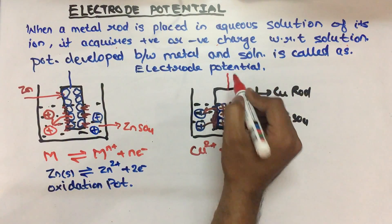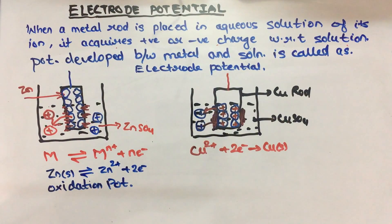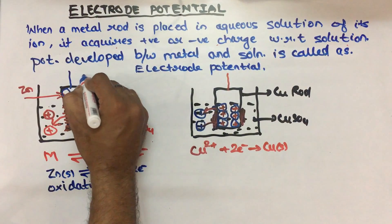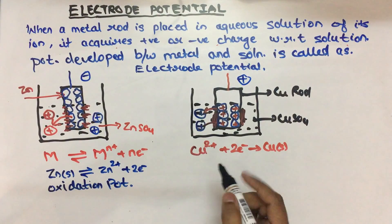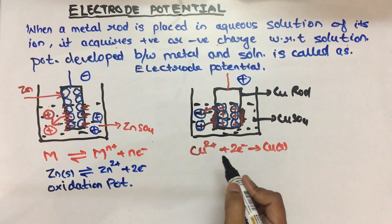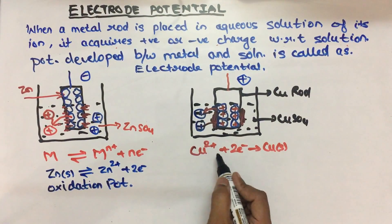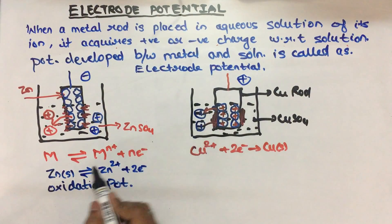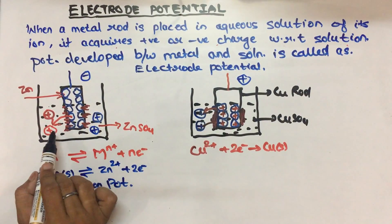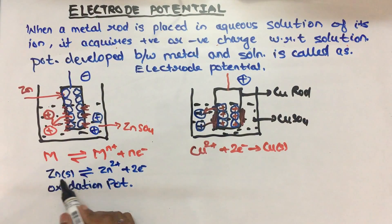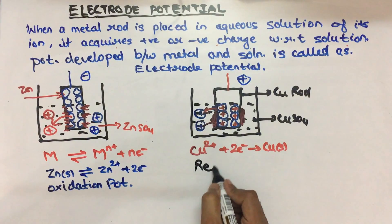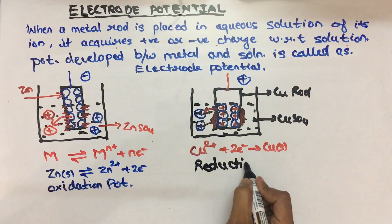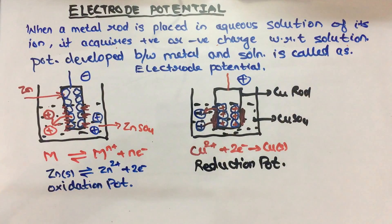So a positive charge develops on the metal rod. This is why the anode is negatively charged and the cathode is positively charged. Actually, an equilibrium is established, but it depends on the nature of the metal. Copper attracts electrons and deposits, while zinc pushes its cations into solution. So equilibrium can go to either side. If equilibrium is on the oxidation side, we call it oxidation potential, and if it is on the reduction side, we call it reduction potential.